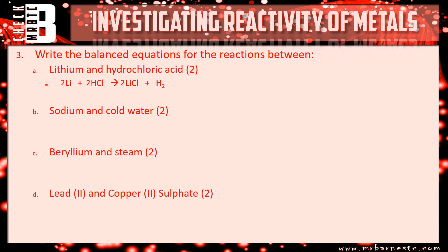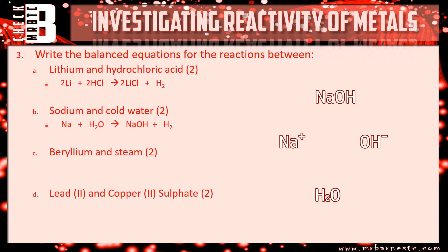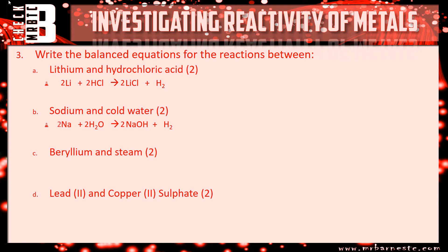Sodium and cold water: sodium is Na, water is H₂O, and sodium hydroxide has the hydroxide ion OH⁻. Sodium is in group one so Na⁺, giving Na + H₂O → NaOH + H₂. To balance: three hydrogens on the right, so put a 2 in front of NaOH; now four hydrogens, so double the water to give four hydrogens. Two oxygens on both sides. Finally, two sodiums on the right so put a 2 in front of Na on the left.